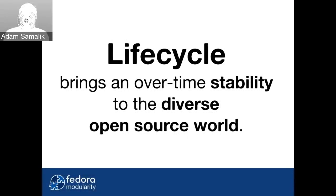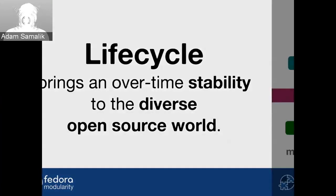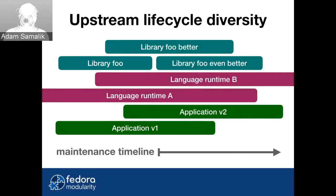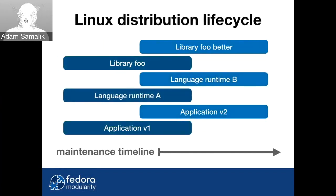The other benefit is lifecycle. It brings overtime stability to the diverse open source world. In the open source world, there are hundreds, thousands, maybe 10,000 projects. They are maintained on different lifecycles — new versions are starting or disappearing, and it's kind of a mess. If you want to run something in production, for example on a server, it might be tricky to figure out where it's supported, if it gets updates, and things like this. What distributions do is take some of these projects and put them on the same lifecycle, so it's easier to navigate.